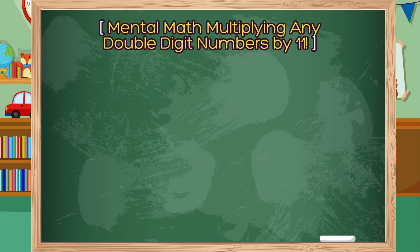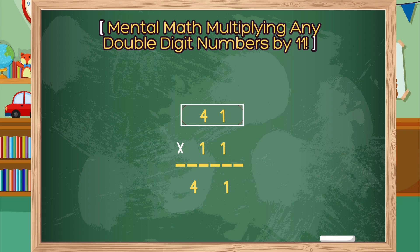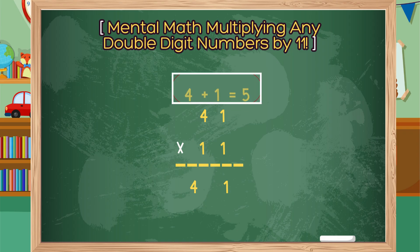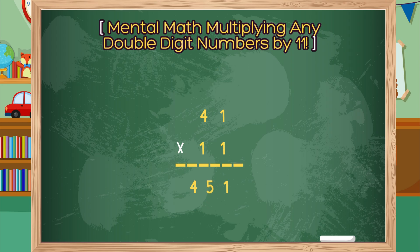One more. 41 times 11. Step 1: Separate the digits of 41 and place them in the product area. Step 2: Add the digits 4 and 1 together, which equals 5. Step 3: Insert the 5 into the sum between the 4 and the 1 in the product. Your answer is 451.